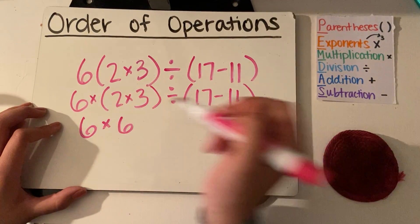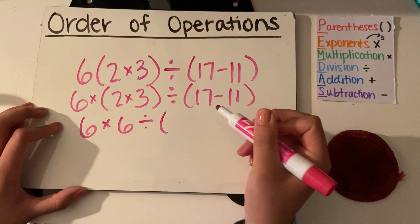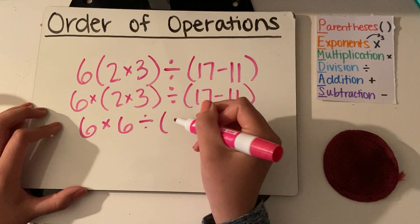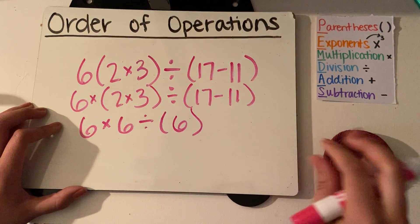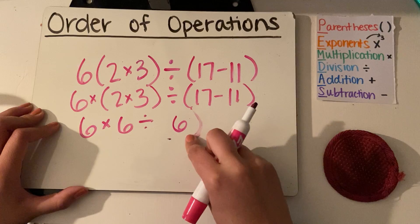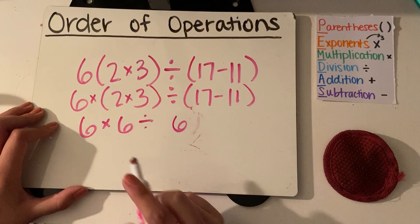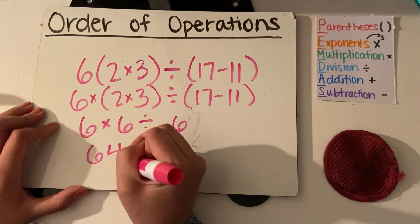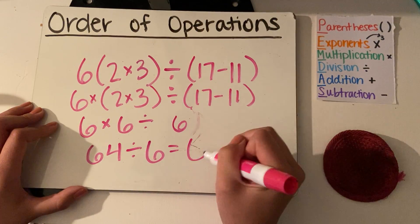So now I have 6 times 6 divided by what's in the parentheses here. I know that 17 minus 11 is 6. I've got all that 6s here. So I don't even need these parentheses now. Now is a time where I would just work left to right. So I'm going to do 6 times 6 is 64. 64 divided by 6 is 6.